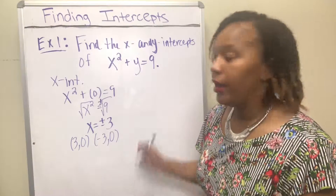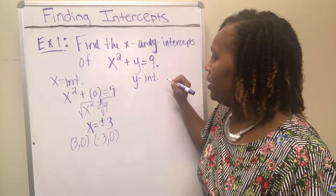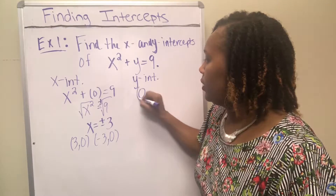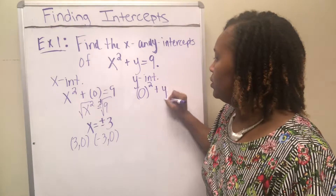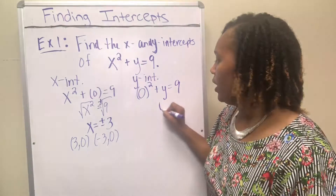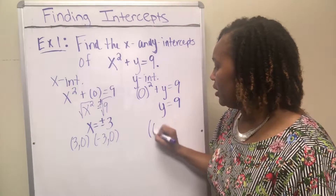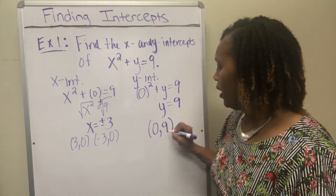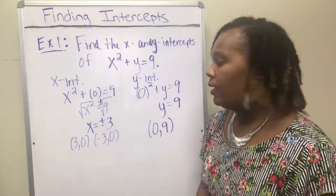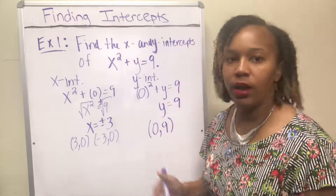Now we'll find the y intercept by letting x equal zero. Replacing x with zero, zero squared is zero, so you're left with y equals nine. That means this graph crosses the y axis at the point zero comma nine. So the two x intercepts are three comma zero and negative three comma zero, and the one y intercept is zero comma nine.